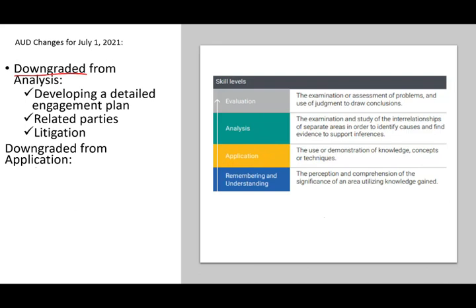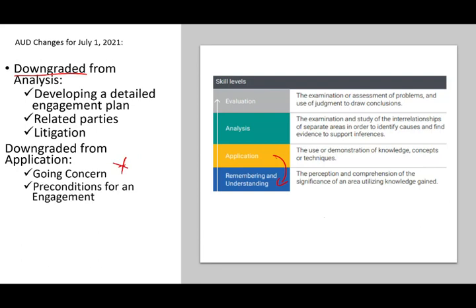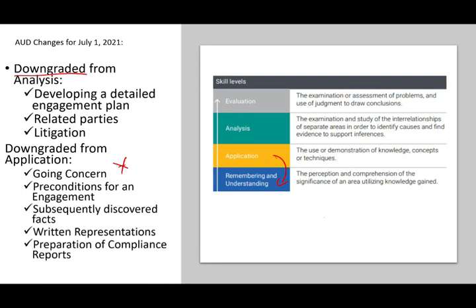Now let's look at topics downgraded from application to remembering and understanding — which is really what you want. These include: going concern, preconditions for an engagement, subsequently discovered facts, written representations, and preparation of a compliance report. All these topics are likely ones that partners primarily deal with, which may explain why they were downgraded — though that's a guess on my part, since many partner-level topics still require detailed knowledge.